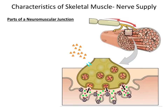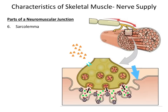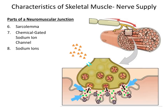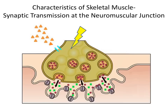Next, we look at the parts of the neuromuscular junction associated with the muscle fiber. The area of the muscle fiber where the motor neuron synapses is sometimes referred to as the motor end plate. The first part of the neuromuscular junction associated with the skeletal muscle fiber is the sarcolemma — the cell membrane of the muscle fiber. On the sarcolemma, you will find chemical-gated sodium ion channels, which open in response to or in the presence of a neurotransmitter. So when a neurotransmitter binds to a receptor on the chemical-gated sodium ion channel, the channel will open. And finally, within the synaptic cleft, you will find free-floating sodium ions.